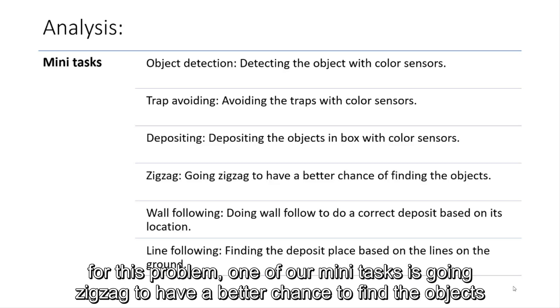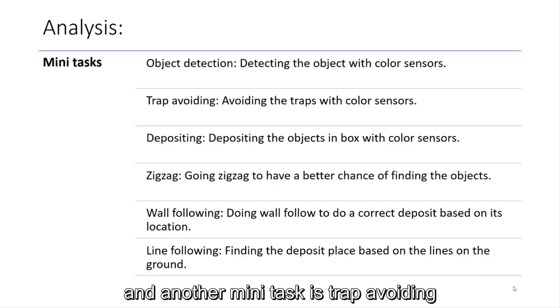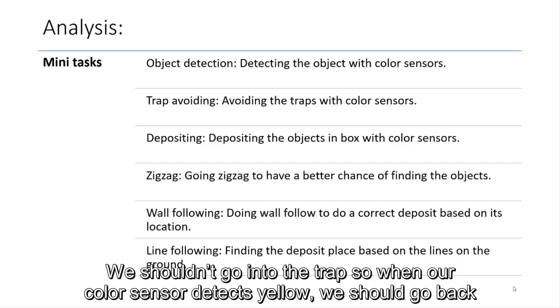For this problem, one of our mini-tasks is don't zigzag to have a better chance to find objects. And another mini-task is trap avoiding. We shouldn't go into traps, so when our color sensor detect the yellow, we should go back.